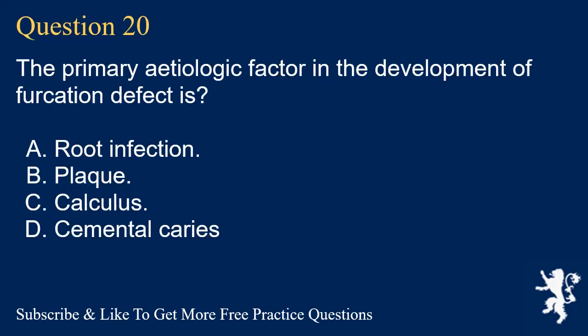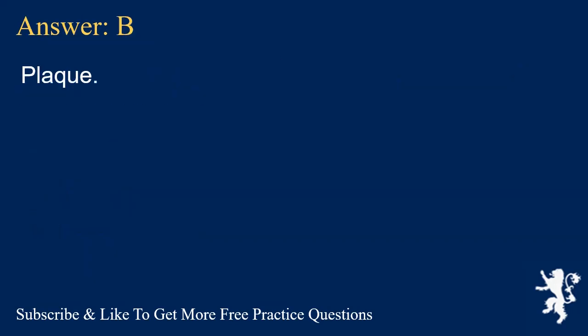Question 20. The primary etiologic factor in the development of furcation defect is? A. Root infection. B. Plaque. C. Calculus. D. Cemental caries. Answer: B. Plaque.